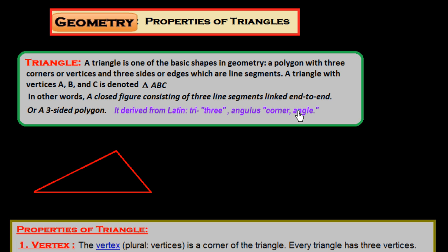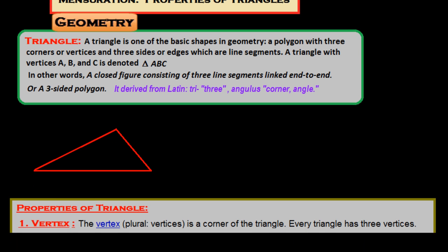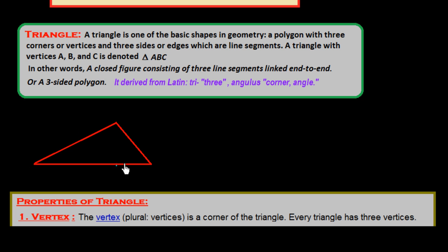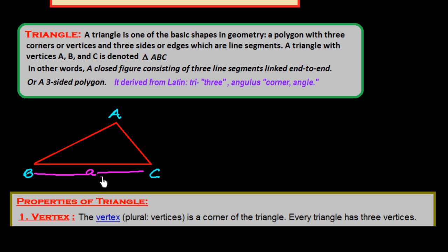Now explaining the triangle: we put names to the vertices or corners. This is vertex A, this is vertex B, and this is vertex C. We always denote the vertex with capital letters of the English alphabet, and the side opposite to the vertex is denoted by a small letter. Side BC, which is opposite to vertex A, is denoted by small a. Side AC, opposite to vertex B, is denoted by small b. Side AB, opposite to vertex C, is denoted by small c. This is the terminology we use in triangles.